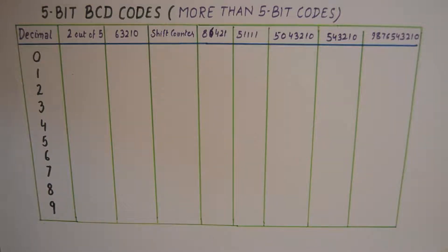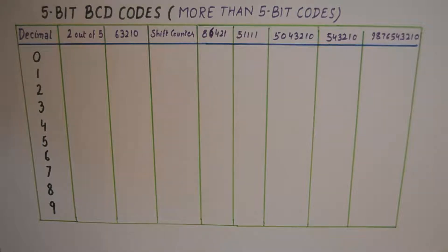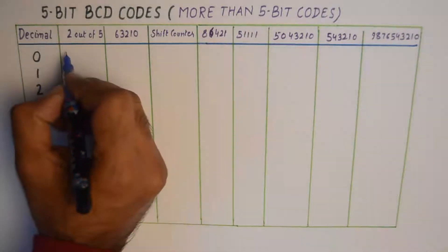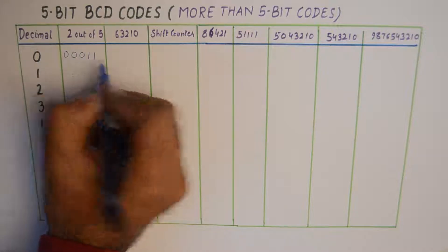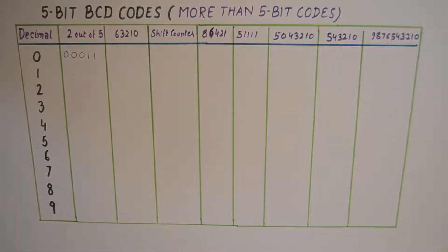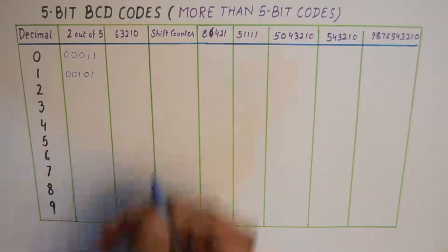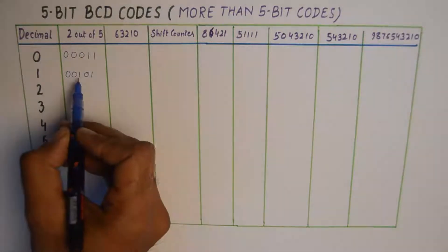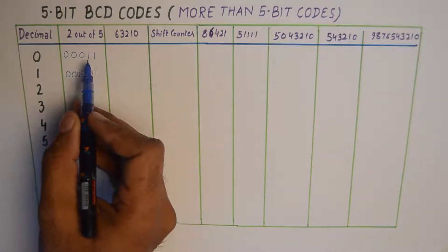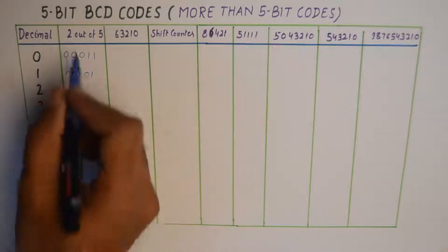The first code we discuss today is the 2-out-of-5 code. It's a fixed code; the rationale behind the code is not known to me. However, in this code only 2 bits out of the 5 bits are kept as 1 for each decimal number. For example, if 0 is represented using 00011, then the number of 1s appearing in the code are 2 — so out of 5, 2 are 1.